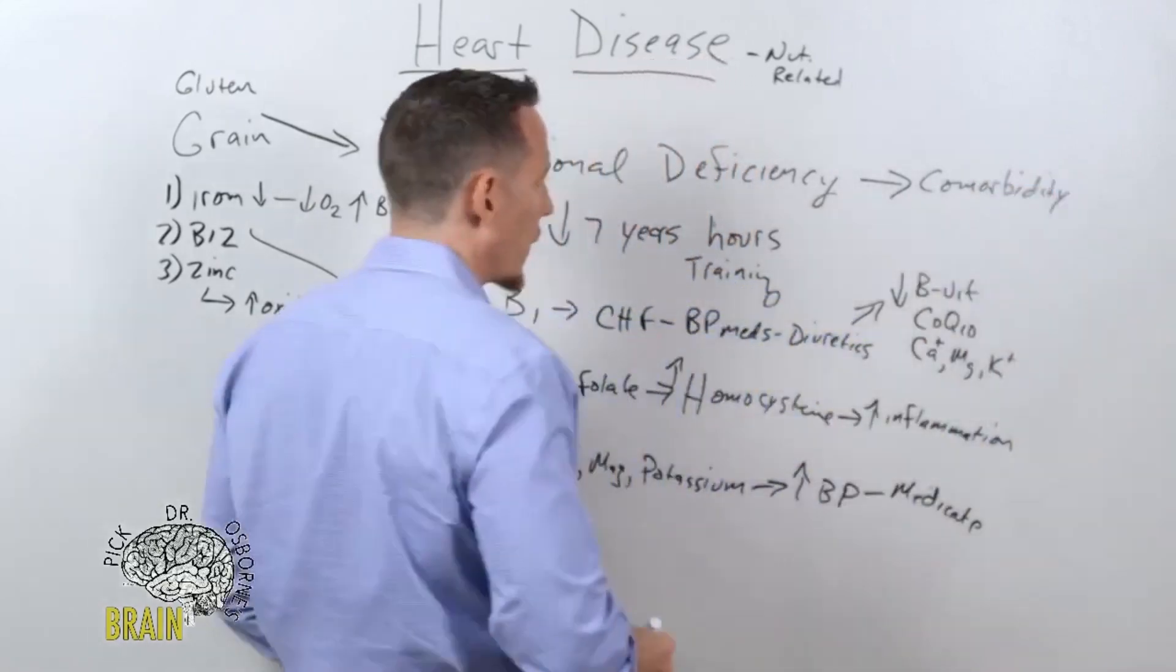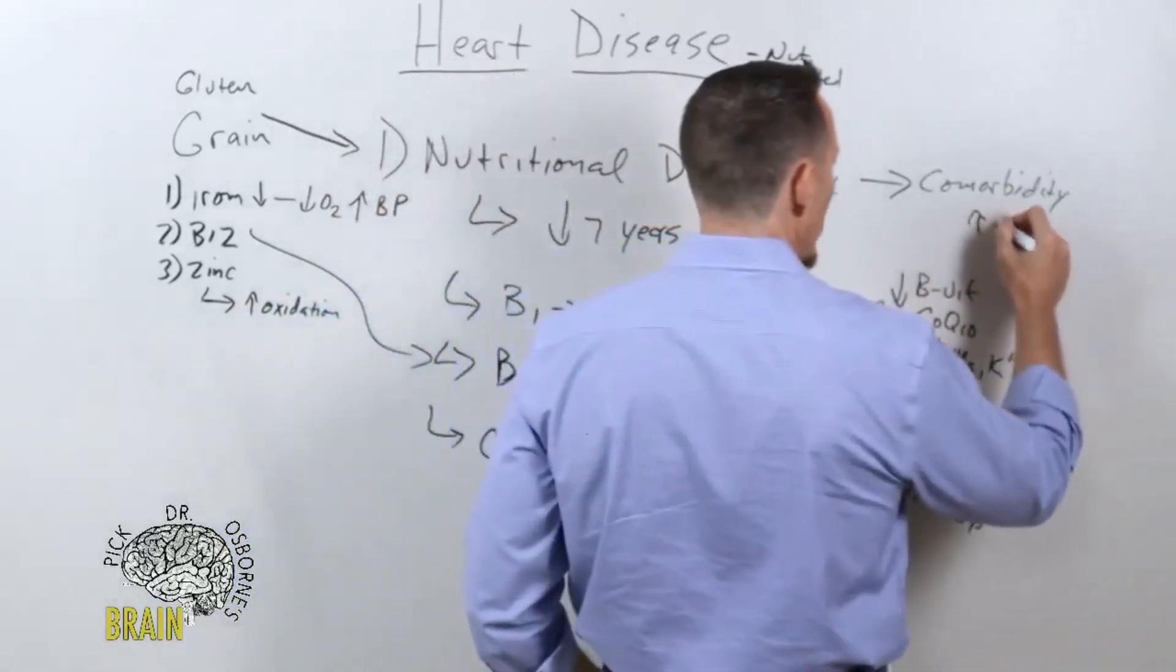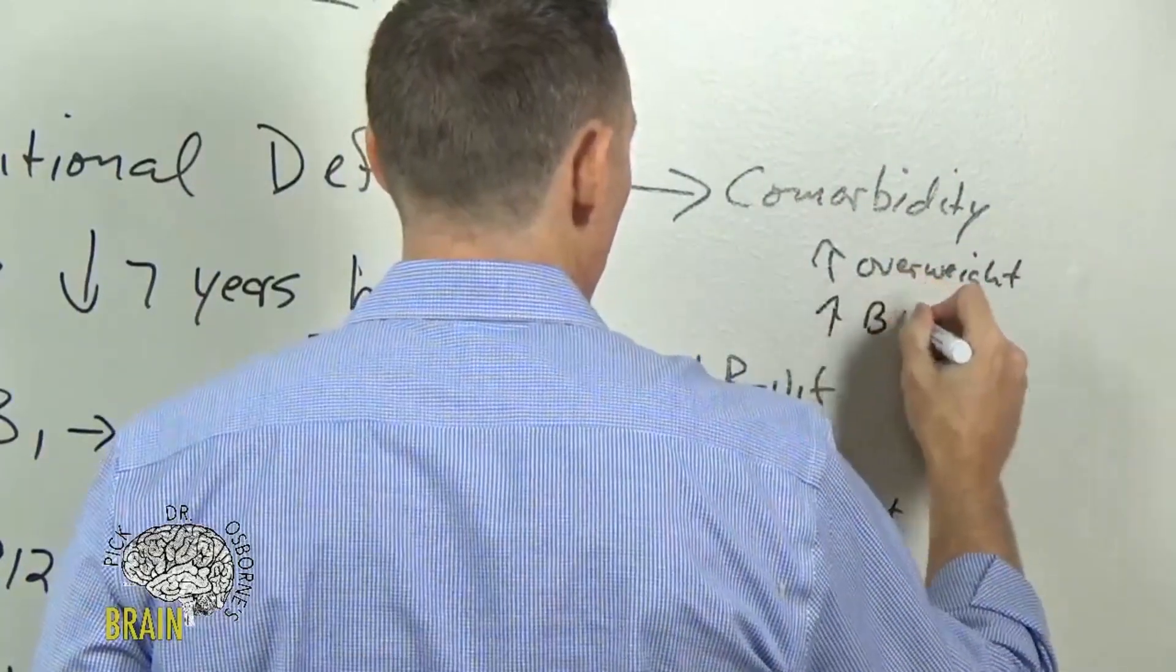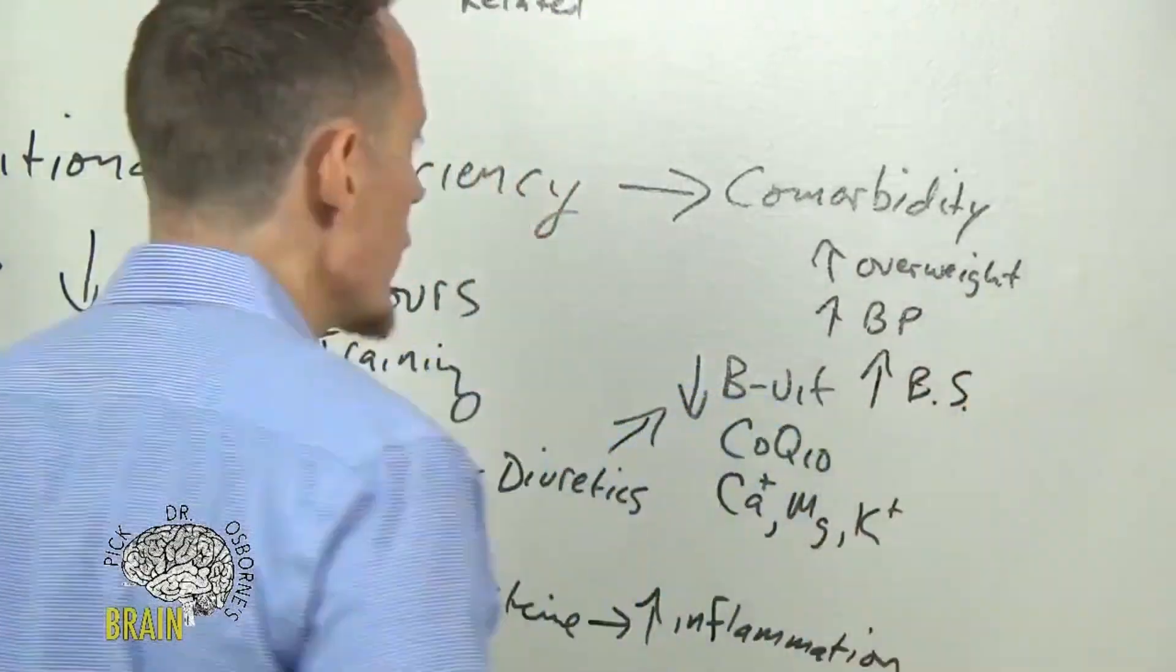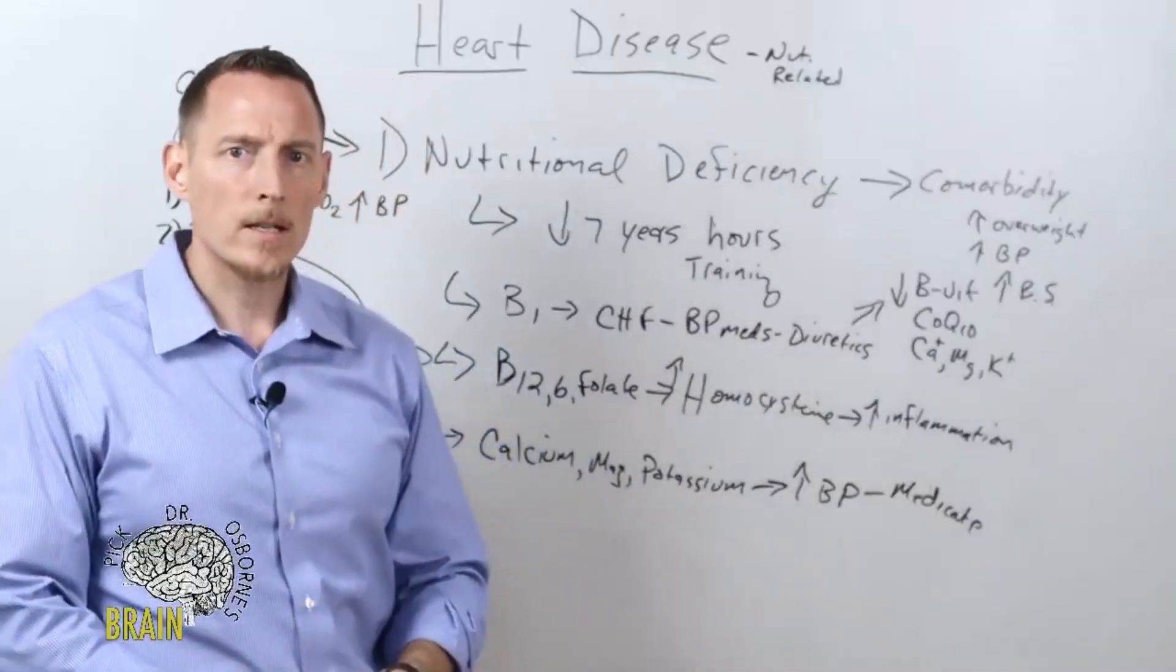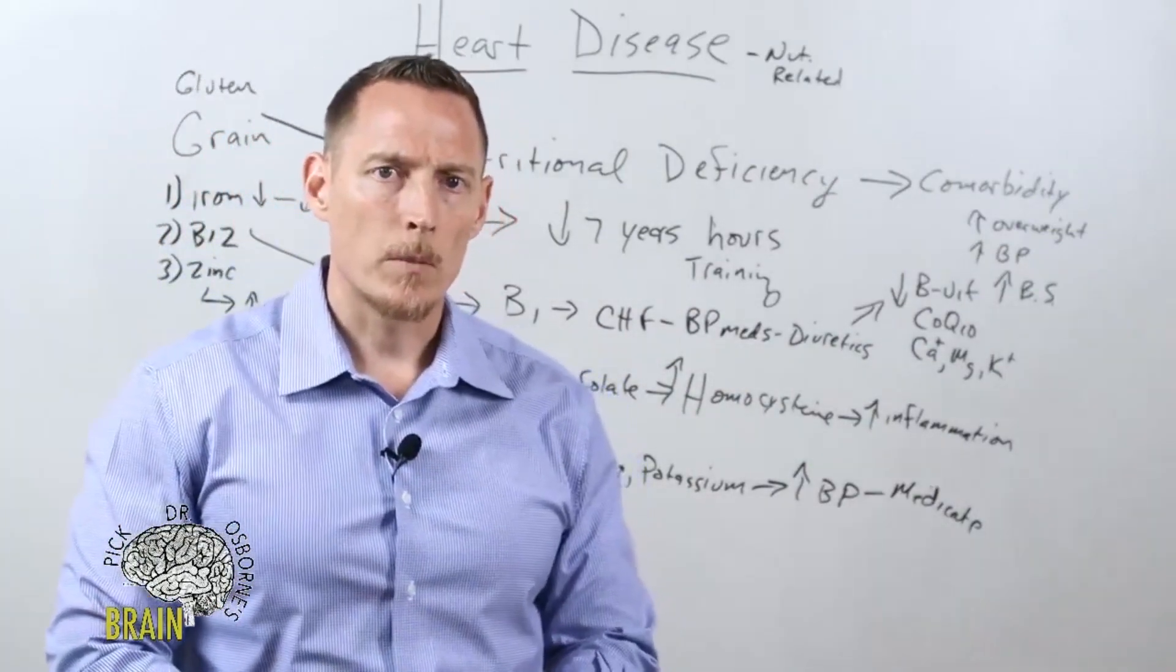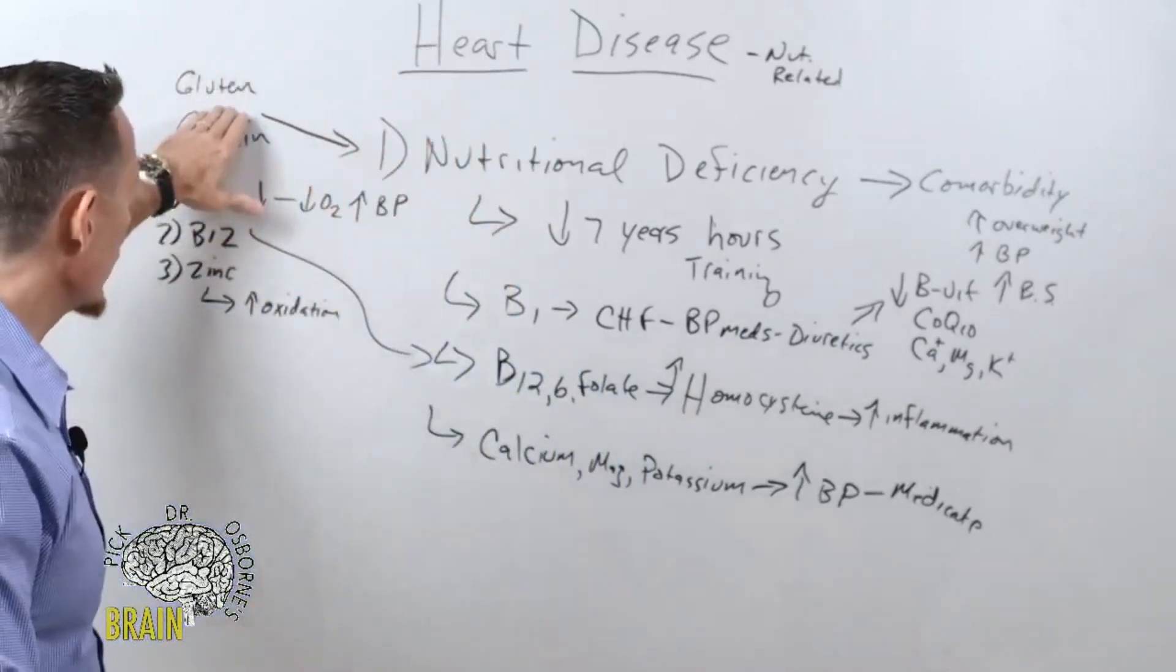For example, comorbidity for heart disease is increased weight, being overweight. Another comorbidity for heart disease is increase in blood pressure. Another is increased blood sugar. These are things that should be being checked. Comorbidities need to be checked because nutritional deficiency can cause all kinds of secondary problems that can lead to an increased risk for the development of a number of different types of disease. That's nutritional deficiency, and gluten and grain can contribute to that.